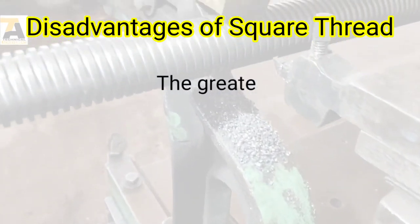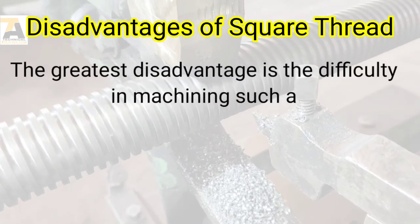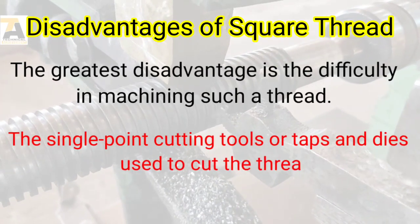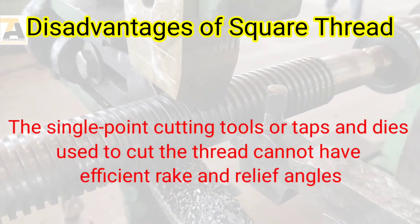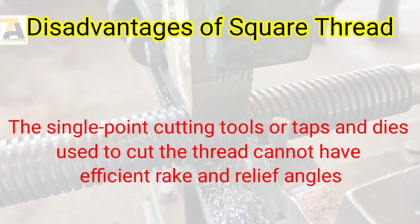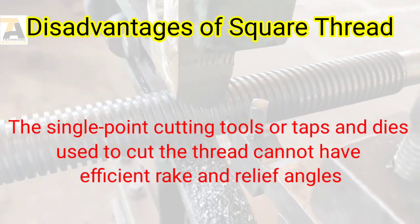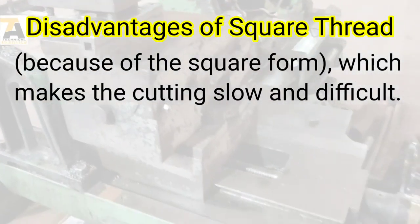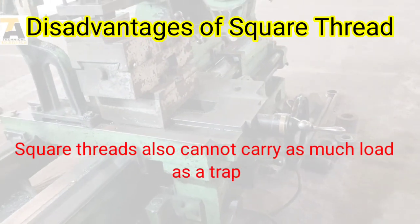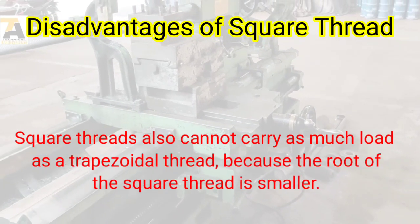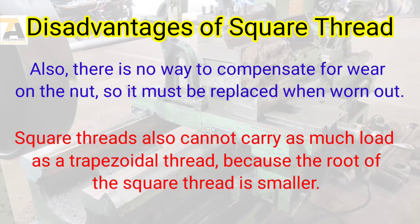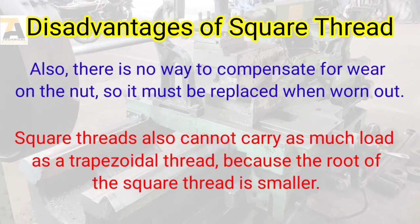Now the disadvantages of square threads. The greatest disadvantage is the difficulty in machining such threads. The single point cutting tools or taps and dies used to cut the threads cannot have efficient rake and relief angles because of the square form, which makes the cutting slow and difficult. Square threads also cannot carry as much load as a trapezoidal thread because the root of a square thread is smaller.